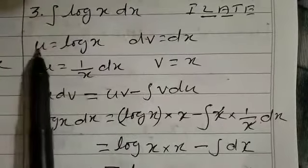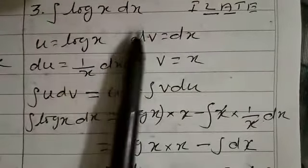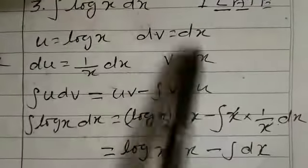So first term we have to take u. So u equal to log x. And then the remaining term we have to take dv. So dv equal to dx.